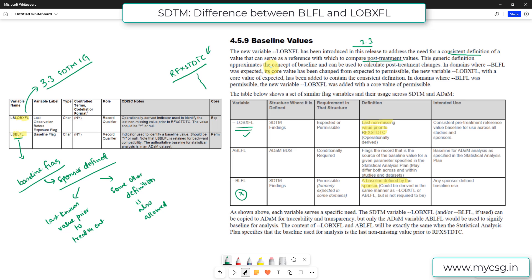So this generic definition approximates the concept of baseline. So it is not saying that the baseline definition should be the last known value prior to RFXSTDTC in your study, but it is approximating to the concept of baseline and can be used to calculate post-treatment changes if you only have SDTM datasets available. So reviewers can quickly go back and check the value present on the record with LOBXFL and compare it with the post-treatment values to calculate the change.